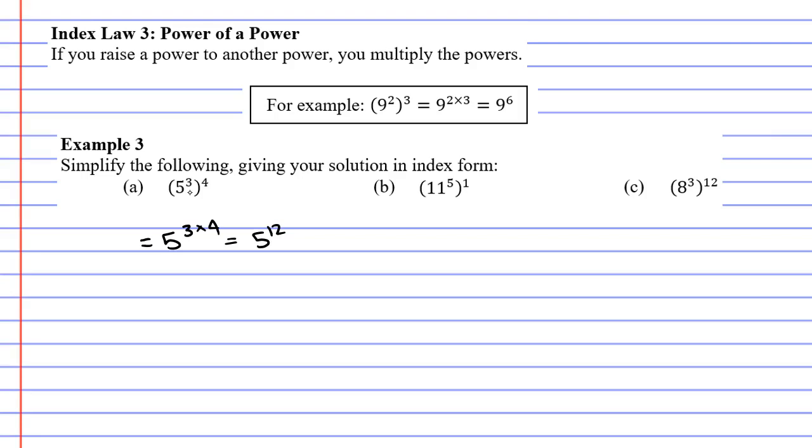Now, moving on to question B. Once again, we multiply the powers, our powers being 5 and 1, so 5 times 1. This gives us 11 to the power of 5.